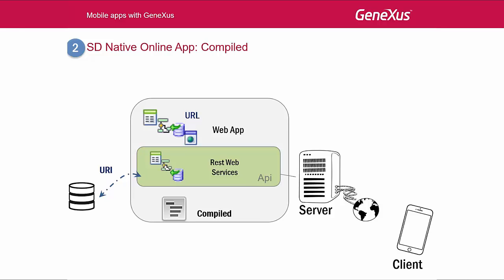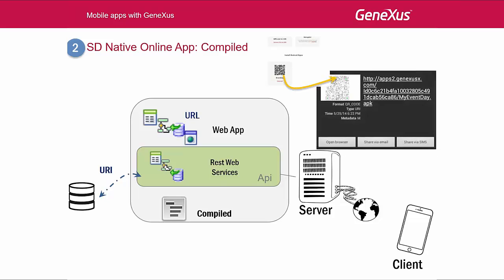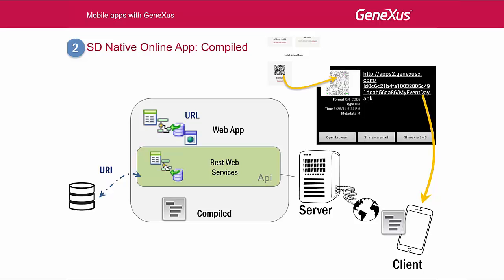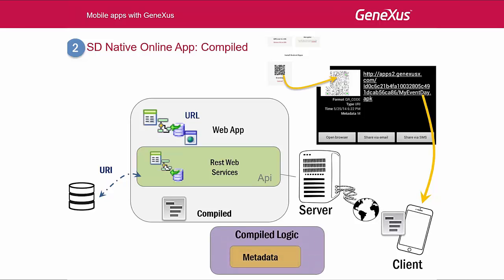The second option is to compile the application in the device language and install it on the device. Each smart device platform has its own language, and therefore its own extension for the compiled file. For example, the extension for Android is APK. This file must be downloaded and installed on the device. After that, the KBN interpreter will no longer be necessary. It will encapsulate the entire metadata and images. This compiled file will contain the entire logic and metadata, and the server will only have to be accessed to run the REST services that return the data from the database.